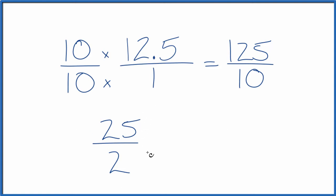This is an improper fraction, 25 over 2. We could write it as a mixed fraction because 2 goes into 25 twelve times with 1 left over. So we'll say 12 and 1 half.